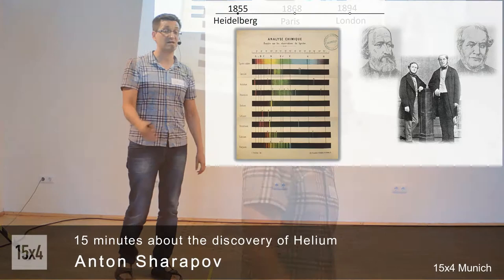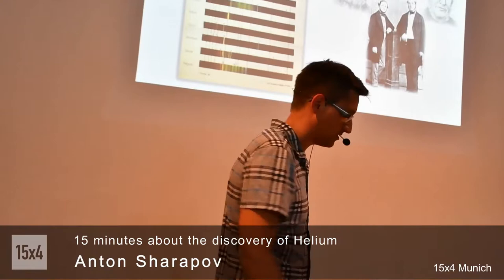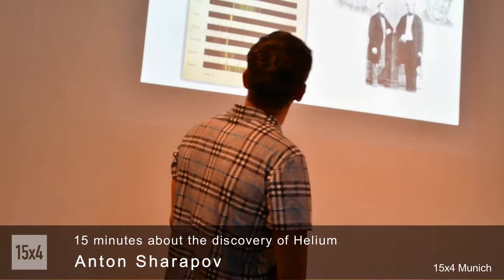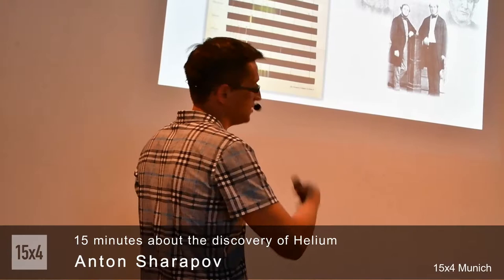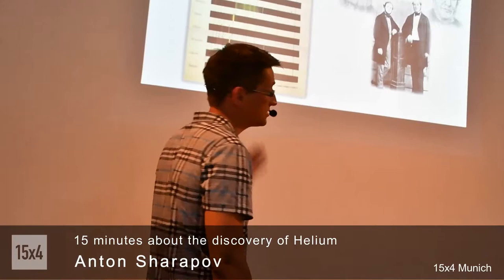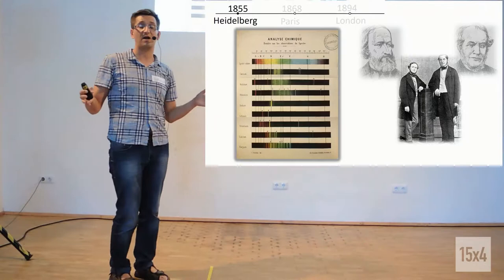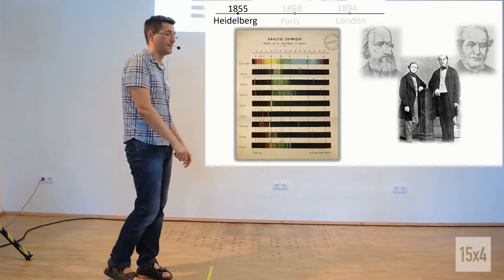Right after that, Bunsen together with Kirchhoff discovered two new elements. They took water from somewhere nearby and found two new elements. First, they named cesium, which means sky blue in Greek, and second, they named rubidium, which means dark red. The names came simply by the colors of the spectrum. So spectroscopy and the spectroscope became a kind of state of art. Immediately, all scientists around the world started to use it.